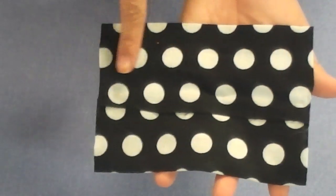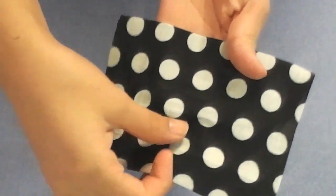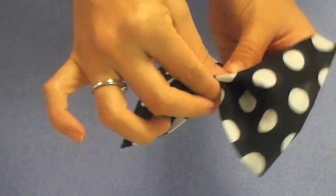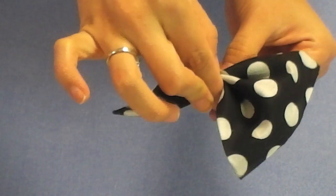And then after you do that, that's the back, you want to face it to the front and you just want to pinch the sides together to meet in the middle and you just want to shape it the way you want it.